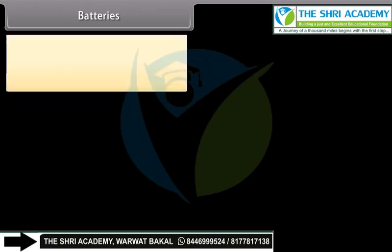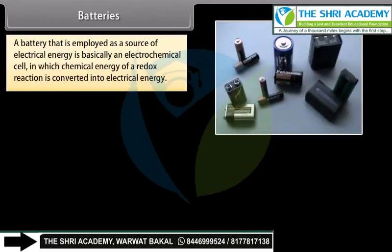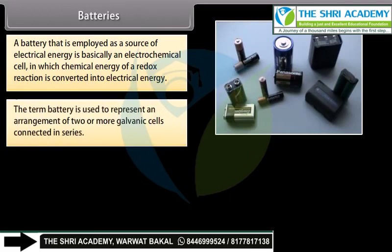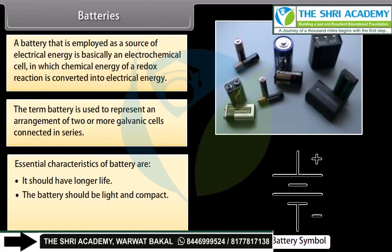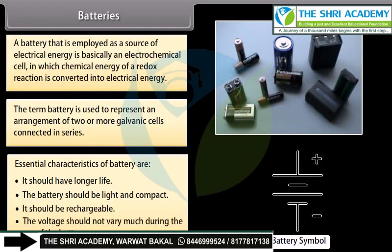A battery employed as a source of electrical energy is basically an electrochemical cell in which chemical energy of a redox reaction is converted into electrical energy. The term battery is used to represent an arrangement of two or more galvanic cells connected in series. Essential characteristics of a battery are: it should have a longer life, be light and compact, be rechargeable, and the voltage should not vary much during use.